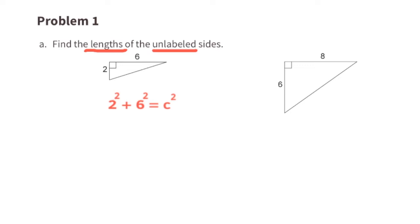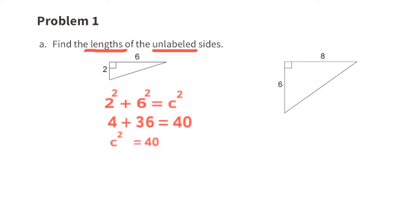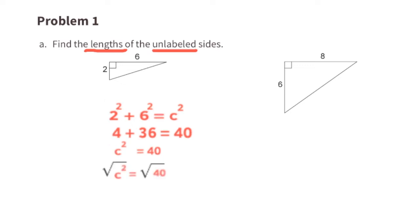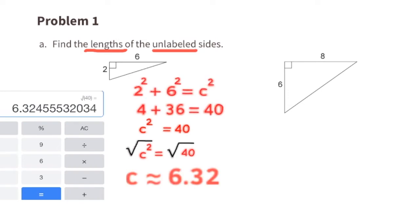In this case we can use 2 squared plus 6 squared equals c squared. Two squared is 4, six squared is 36, and 4 plus 36 equals 40, so c squared equals 40. The length of the missing side would be the square root of 40, which is approximately 6.32 units.